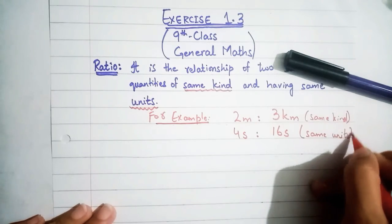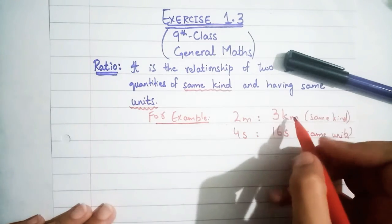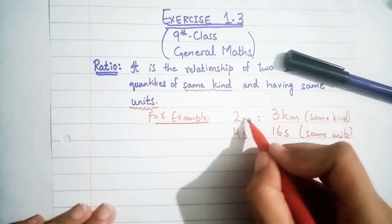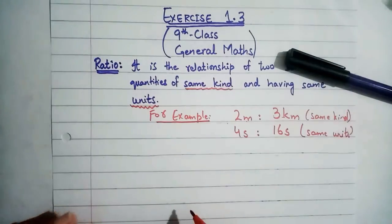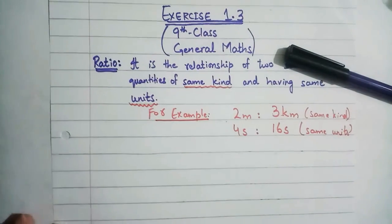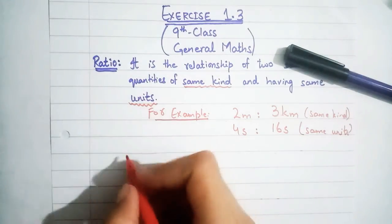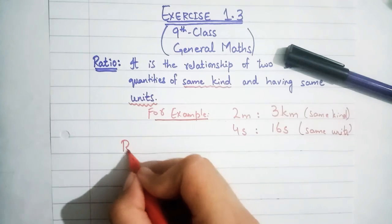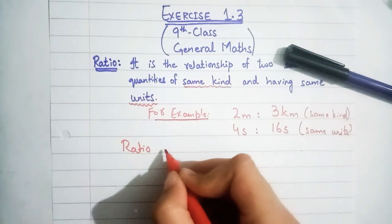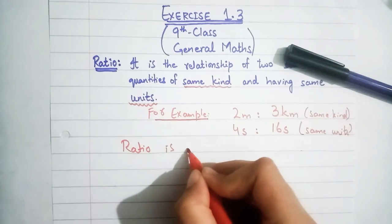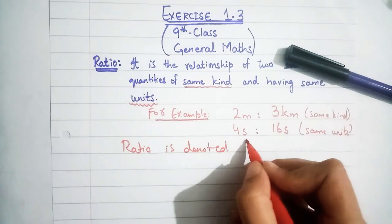So if you have been given quantities in different units, you will convert them into one unit first and then solve. Ratio is denoted or represented by a semi-colon — these two dots — for example, a ratio b is written as a : b.